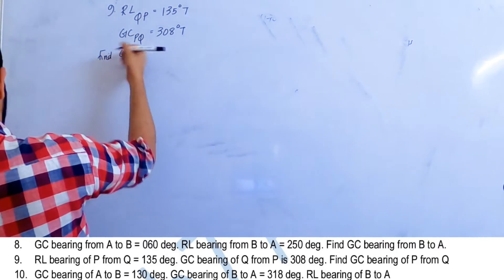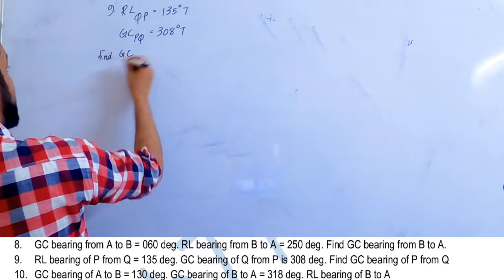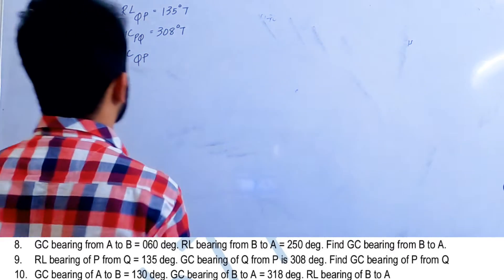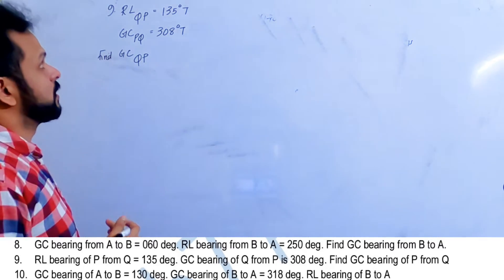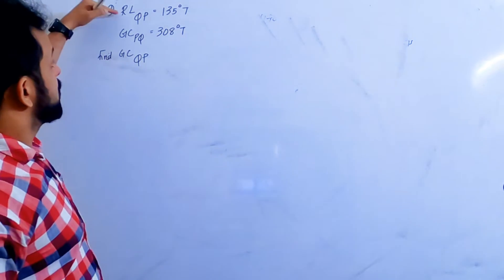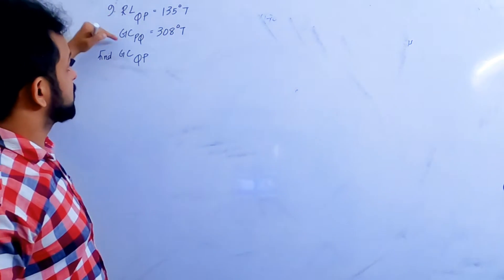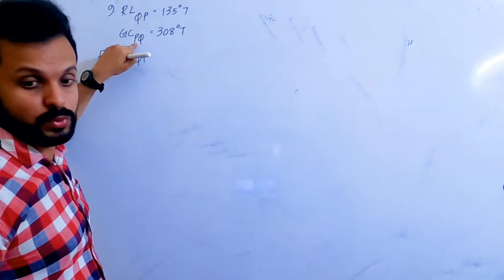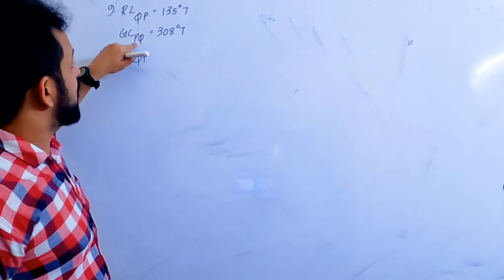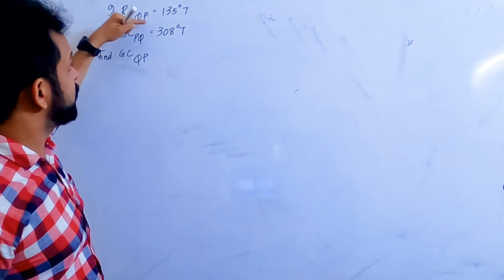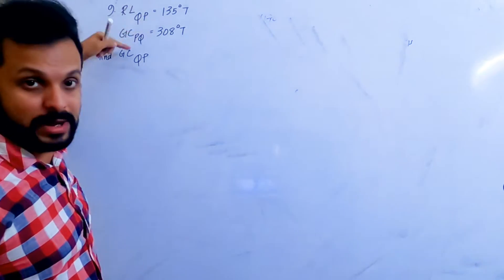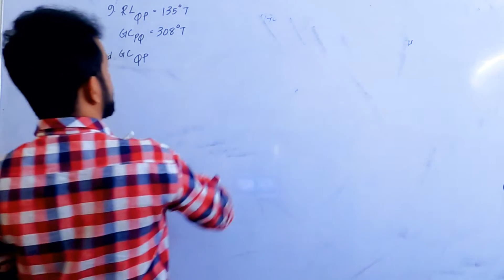Find the great circle track of P from Q. So again, you have uncertainty regarding the hemispheres here. You can see: rhumb line from Q to P and great circle from P to Q. So if I can convert the rhumb line from Q to P to a rhumb line from P to Q, I can compare it with the great circle from P to Q.